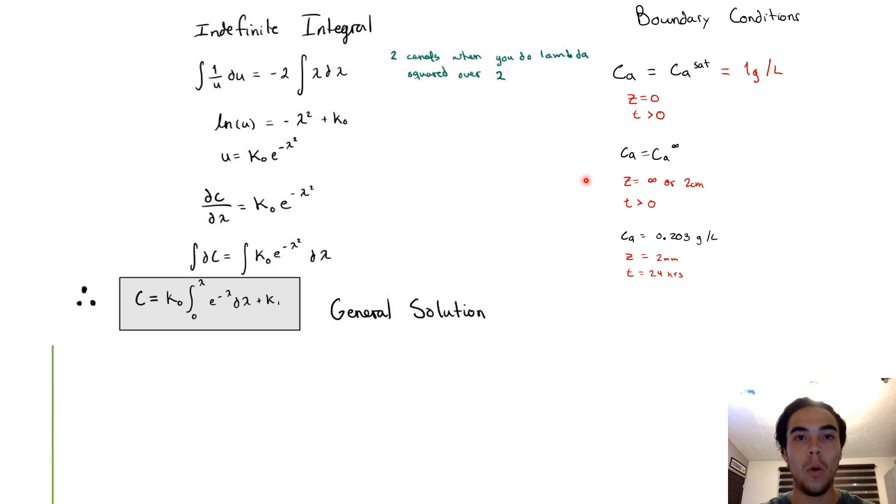We then establish our boundary conditions. When CA is at C₀ and t is greater than zero, we obtain that CA is the concentration of saturation, which is one gram per liter. Then CA is going to be our concentration measured at two millimeters after a period of 24 hours.